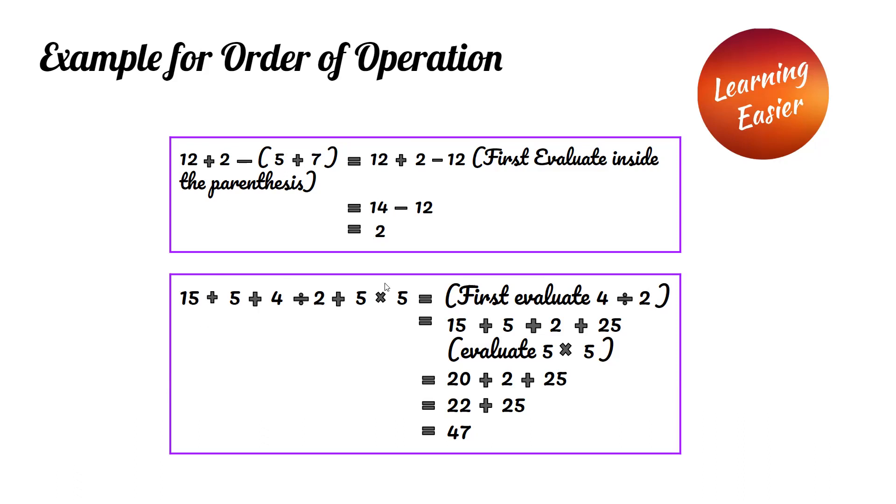In this example, we have to evaluate 4 divided by 2, since we are doing it left to right. 4 divided by 2 is 2. Then we evaluate 5 times 5, which is 25. 15 plus 5 is 20. 20 plus 2 is 22. 22 plus 25 is 47. So 47 is the answer for this problem.